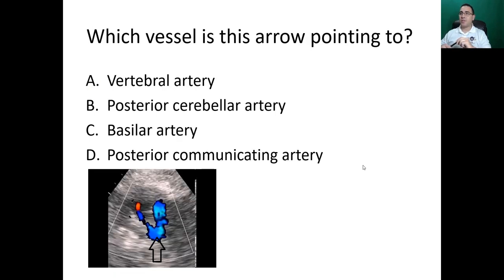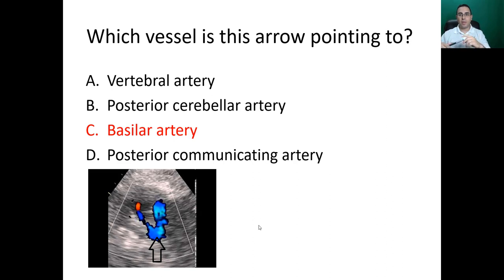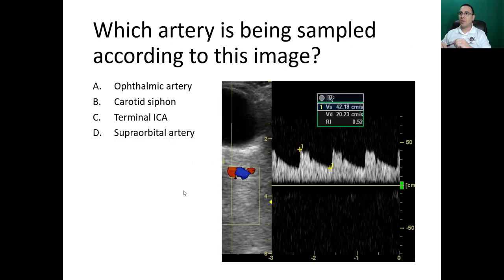Next question: which vessel is this arrow pointing to — vertebral artery, posterior cerebellar artery, basilar artery, or posterior communicating artery? The clue is that you're using a trans-occipital or sub-occipital window. The answer is the basilar artery — one vertebral artery joins the other vertebral artery, and both unite to form the basilar artery. This is the posterior circulation and part of the circle of Willis.